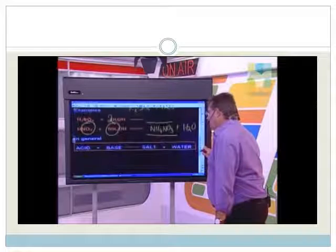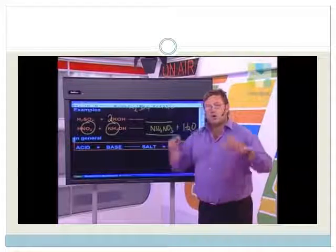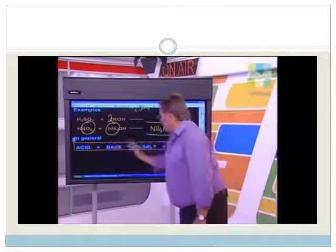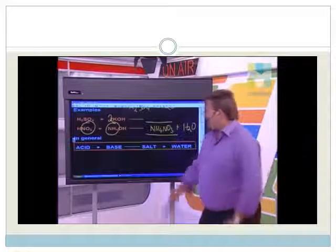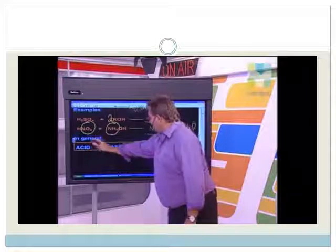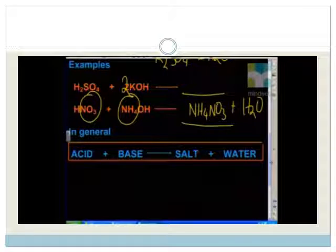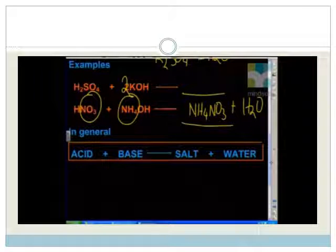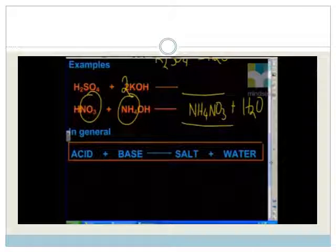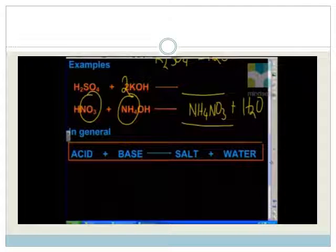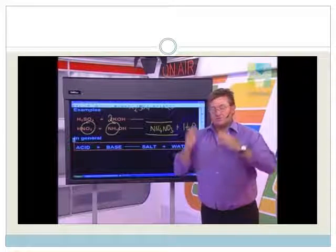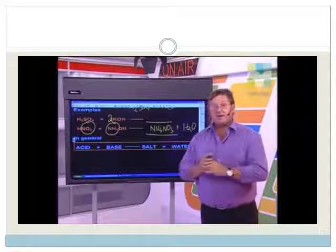Just to conclude this lesson, let's chat about our general equation. Acid plus base will always give us a salt plus water. So if you're studying a reaction between an acidic compound and a basic compound, you will know that you will always get a salt and water as a product.